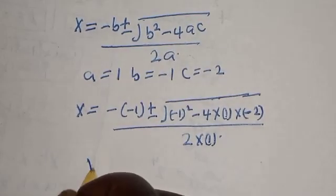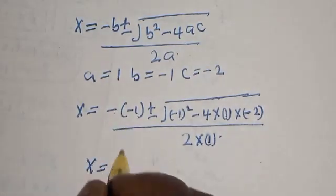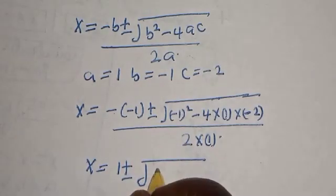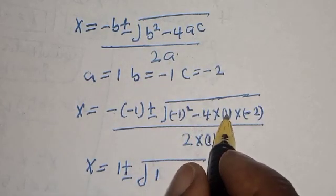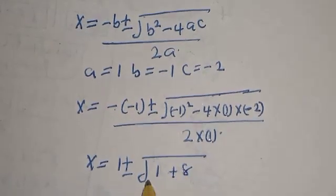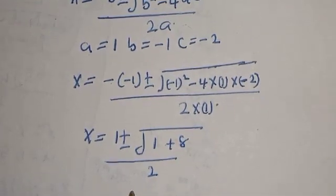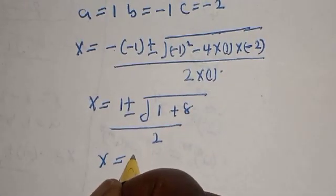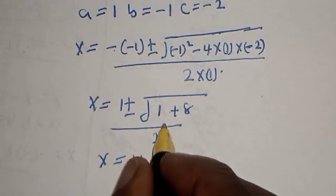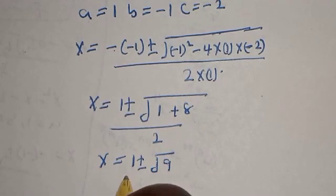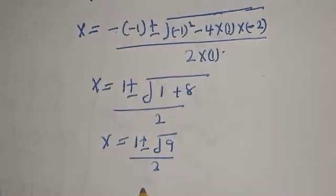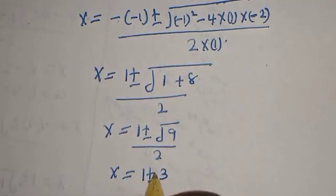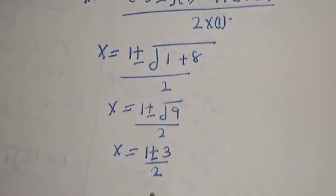Simplifying: s equals 1 plus or minus square root of (1 plus 8), over 2. That gives s equals 1 plus or minus square root of 9, over 2. Since the square root of 9 is 3, we have s equals 1 plus or minus 3, over 2.